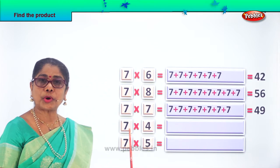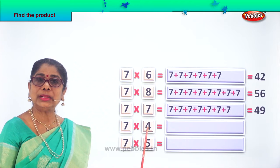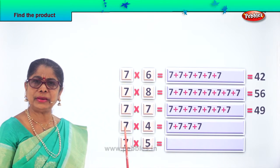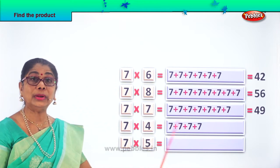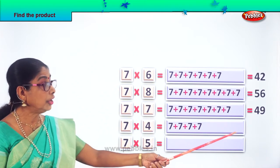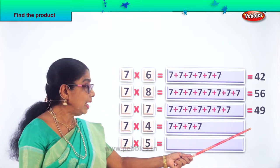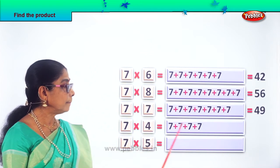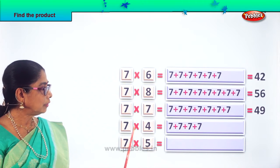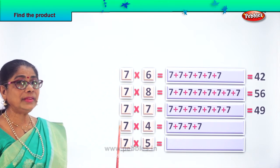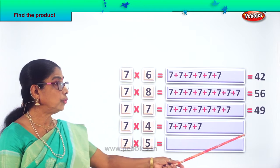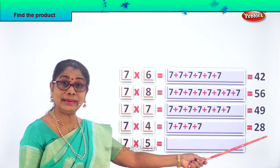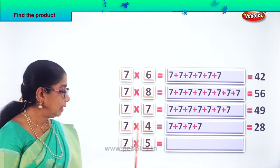Now we have find the product of 7 into 4. 7 four times: 7 plus 7 plus 7 plus 7 — so 1, 2, 3, 4 times. What are 7 fours? What is the product of 7 into 7? Sorry — 7 into 4. 7 into 4 gives you the answer.